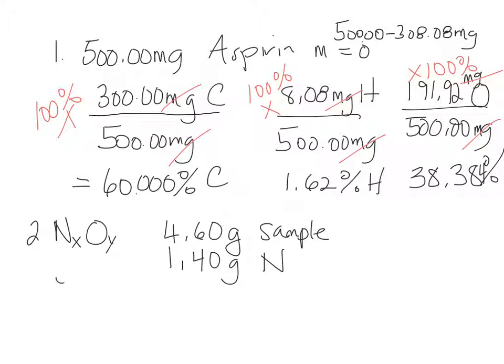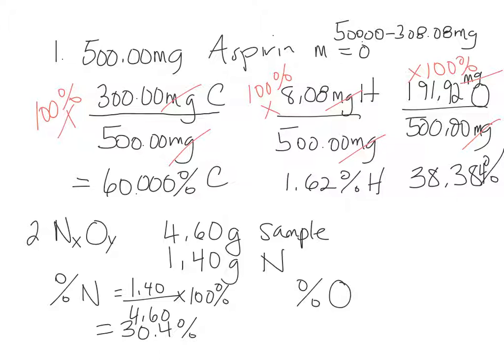If it's asking for a percent composition, we want the percent nitrogen, and we want the percent oxygen. So right now we can figure out percent nitrogen. That would be 1.40 divided by 4.60 times 100%. 30.4%. Now we've got to figure out percent oxygen. So there's two ways we can do it. We can say 4.6 minus 1.4 gives us the mass of oxygen. How many other elements are in this compound? There's only two. So if we calculated one of them, how do you find the second one?